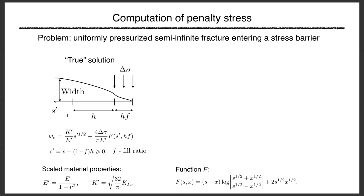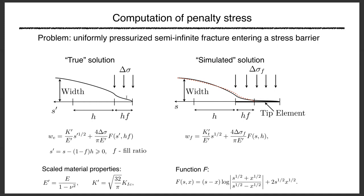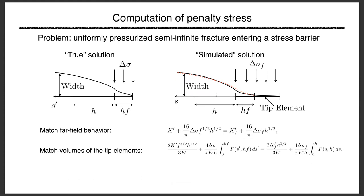In the numerical scheme you must move the fracture front to the edge of the element, but you want the far-field behavior to remain the same. So you apply a penalty stress to compensate for moving the fracture front, keeping the solution equivalent. The magnitude is unknown — the stress intensity factor no longer needs to equal the material toughness — but we make the two solutions equivalent by matching far-field behavior.